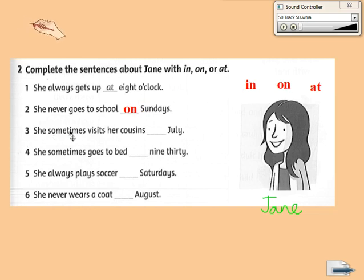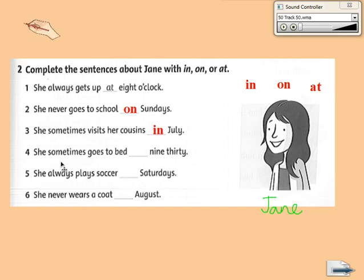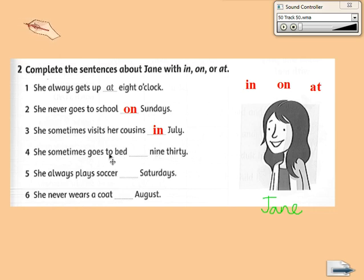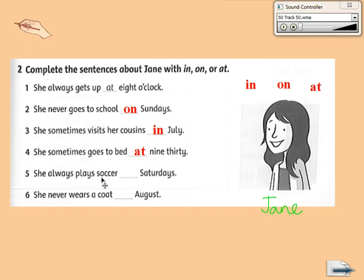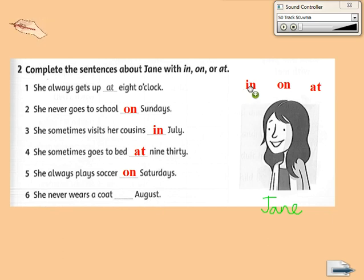Number 3 — you see the word 'tonight' here, so we use 'in' — in tonight. Number 4 — 9:30, goes to bed — she goes to bed at 9:30, so we use 'at'. Number 5 — Saturday, so we use 'on'. Number 6 — August, so we use 'in'.